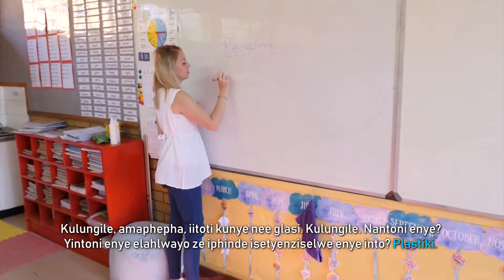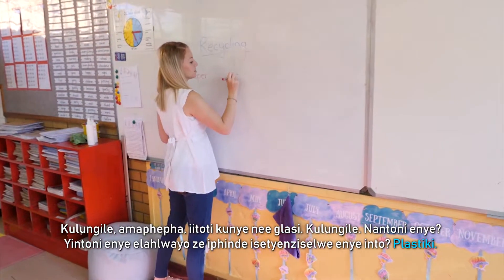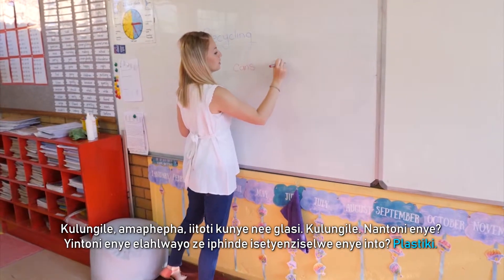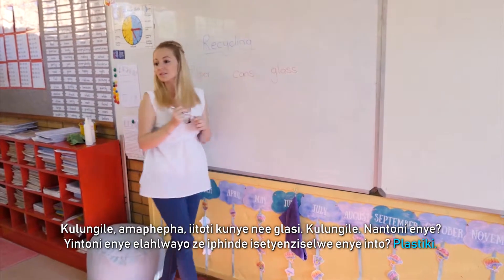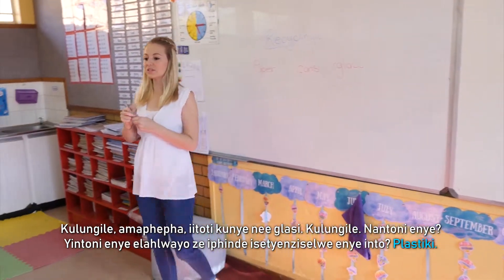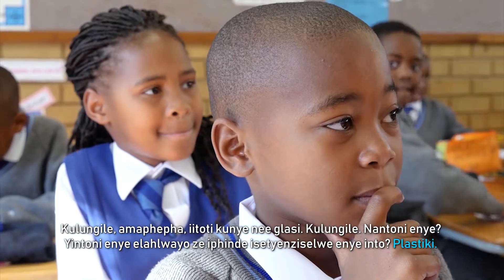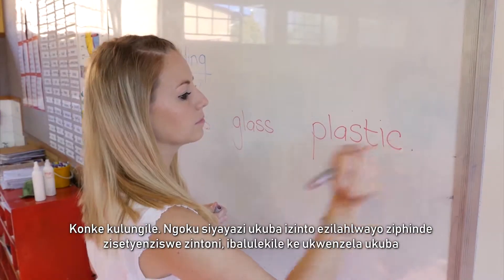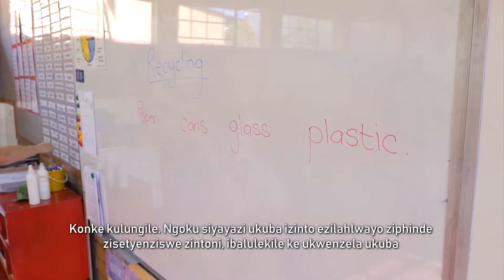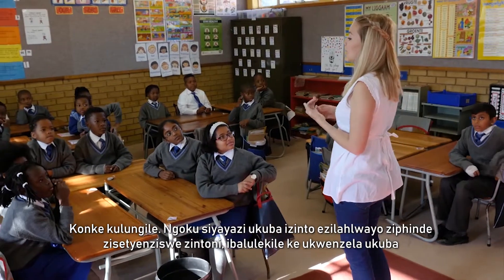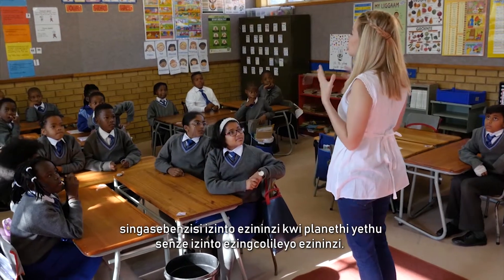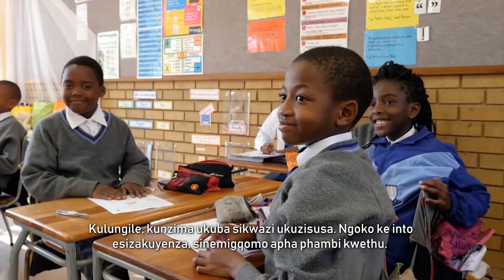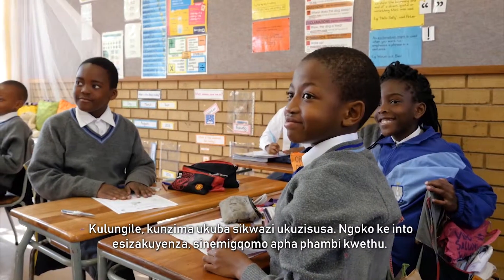Paper, cans and glass. What else can we recycle? Plastic. So now we know what recycling is. It's very important so that we don't use too many things on our planet and create more rubbish. It's difficult for us to try and get rid of it.